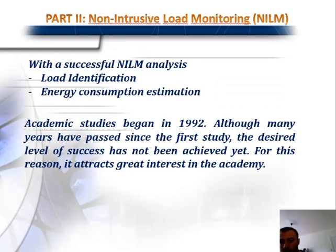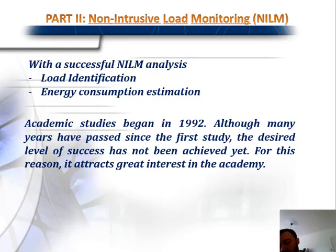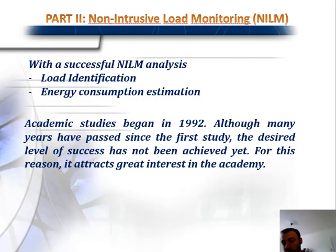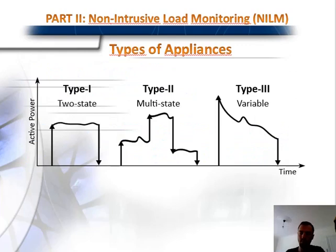If we implement a successful NILM analysis, we can have two results: the first is load identification — we can understand which loads are active and which are not. The second is energy consumption estimation — we can understand how much energy each appliance consumes. The first academic study was done in 1992, and although many years have passed, the desired level of success hasn't been achieved yet. But especially now, with the wide-scale rollout of smart meters, studies are gaining speed again.